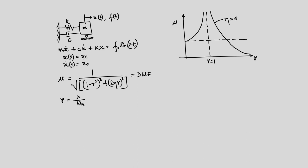If we have non-zero damping, the system will have a finite maximum, and we can derive the expression for that maximum and the corresponding r — all derived in previous lectures. Even with finite damping, if r is close to or equal to 1, the dynamic response will be more than the static response. Today we will see how we can use this information to quantify damping.